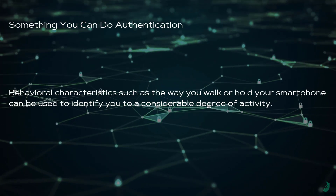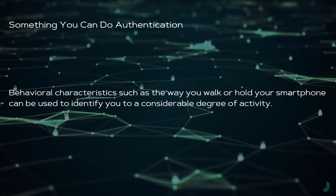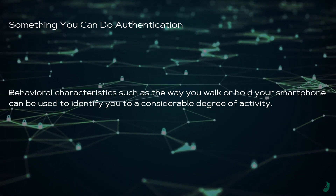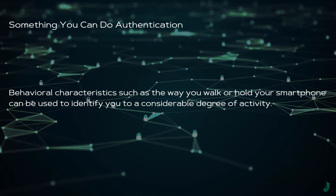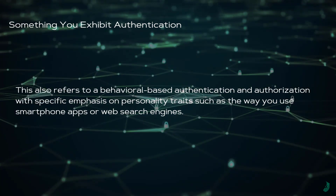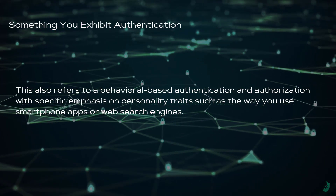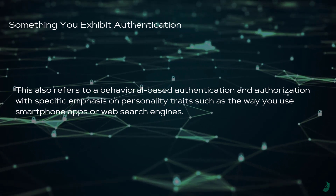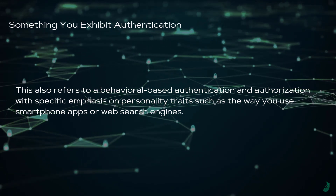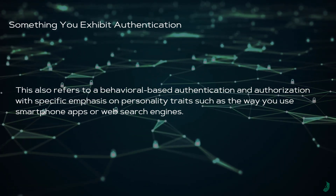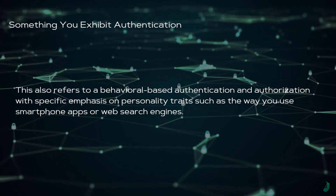'Something you can do' involves behavioral characteristics such as the way you walk or the way you hold your smartphone, and can be used to identify you to a considerable degree. 'Something you exhibit' also refers to behavioral-based authentication and authorization, with specific emphasis on personality traits such as the way you use your smartphone apps or your web search engine history.